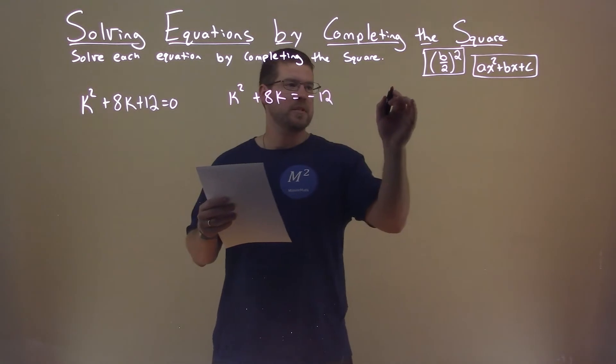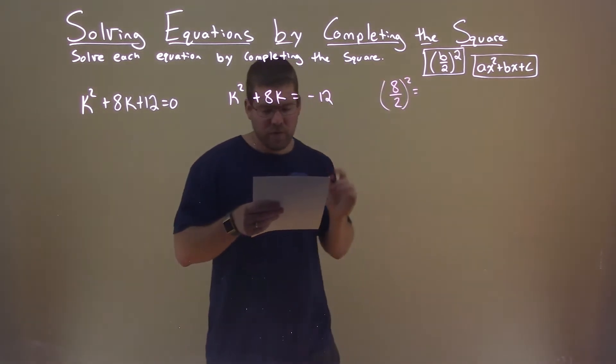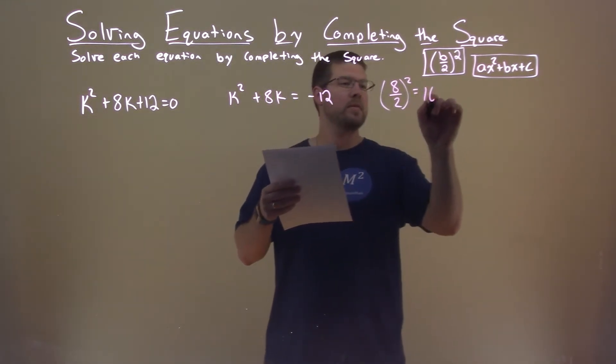Now let's look at our b value, which is 8. Using our formula, 8 divided by 2 squared. 8 divided by 2 squared comes out to be 16.